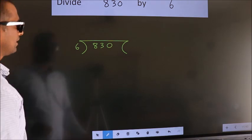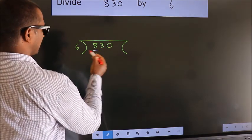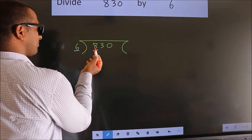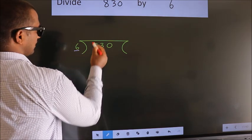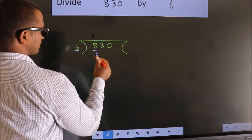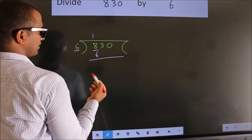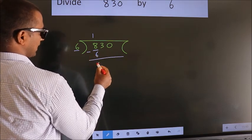Next. Here we have 8, here 6. A number close to 8 in the 6 table is 6 times 1 equals 6. Now we should subtract. We get 2.